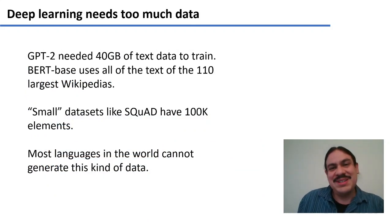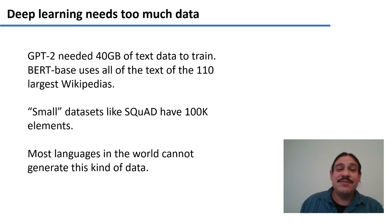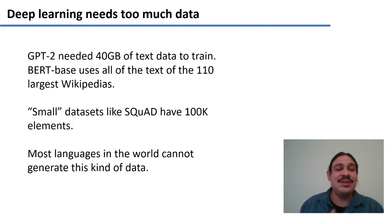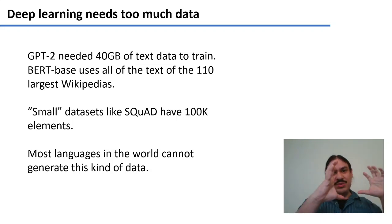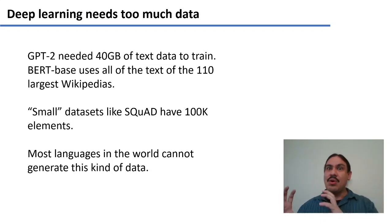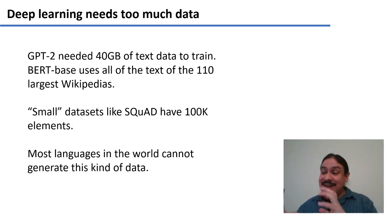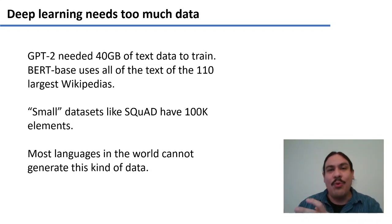Let's talk about data for a minute. GPT-2 needed 40 gigabytes of text to train. BERT has a multilingual version that takes text from around 110 Wikipedias — all of the English Wikipedia, all of the Spanish-language Wikipedia, all of the French-language Wikipedia, and so forth.